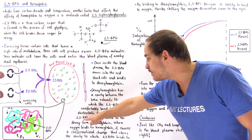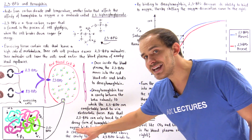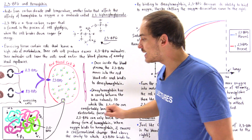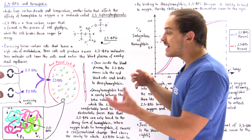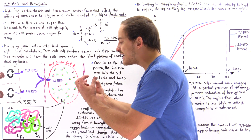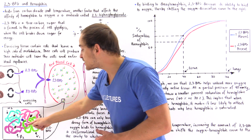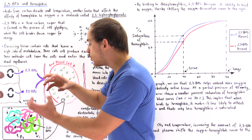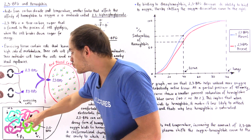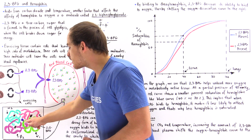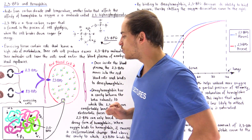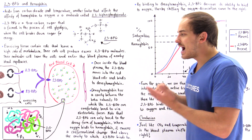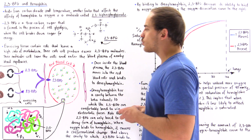2,3-BPG can only bond to the deoxy form of hemoglobin because when oxygen binds onto the hemoglobin, it creates a conformational change that narrows that central space. Once oxygen is bound to the hemoglobin, that space closes in and the 2,3-BPG can no longer bind. So 2,3-BPG only binds to deoxyhemoglobin proteins within the red blood cells.